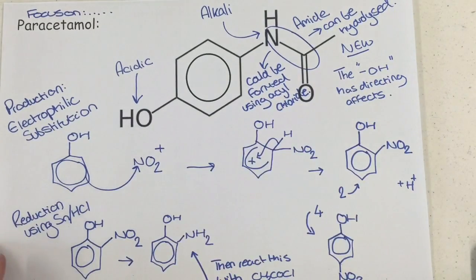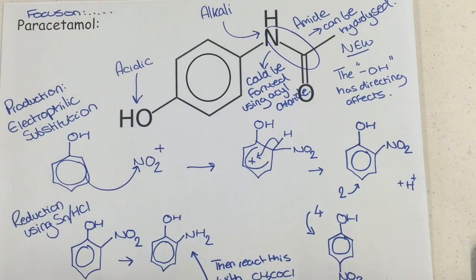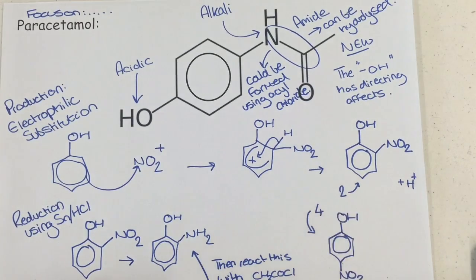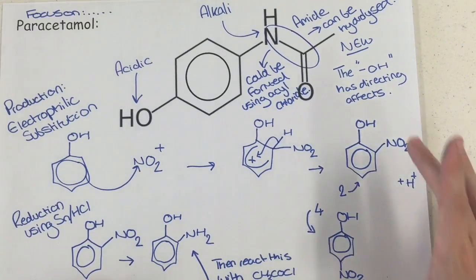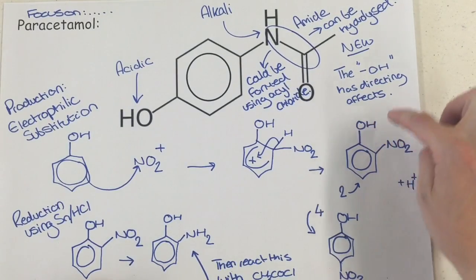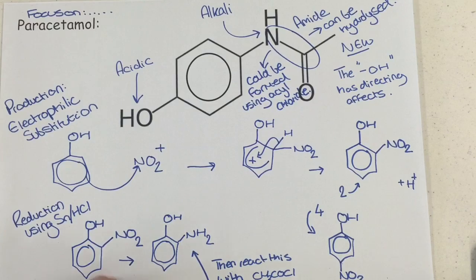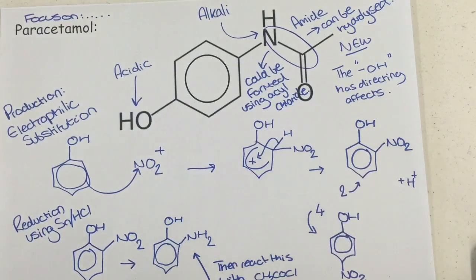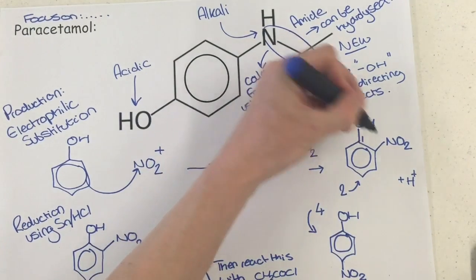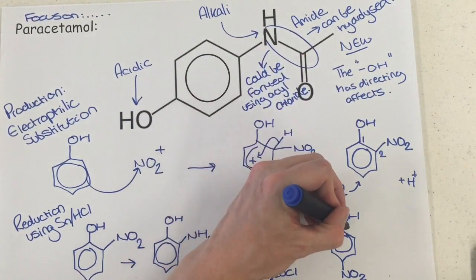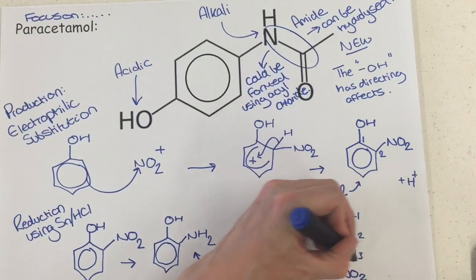The OH is an electron-donating substituent to the benzene ring, so that means we're likely to form the 2 and 4 substitutions of the NO2 group. This — knowing that OH is an electron-donating group — is brand new to the specification, so you need to be aware that you could add it to position 2 (counting OH as position 1), or you could add it to position 4.